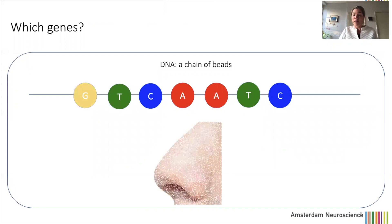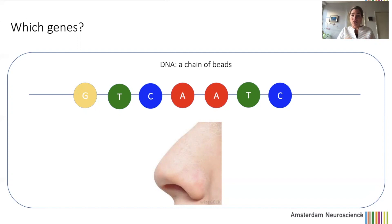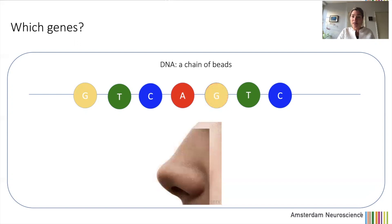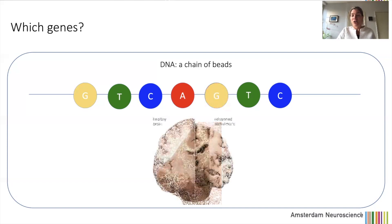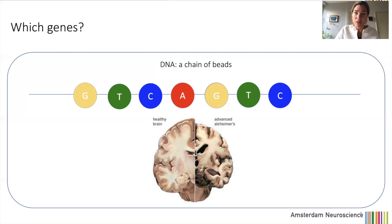Imagine that a piece of DNA codes for the form of your nose. The genome is made of four different molecules: G, T, C, and A. Now imagine that this piece of DNA is coding for one shape of nose. If the A turns into a G, then perhaps the nose will be a little bit different. This means that this one small change of molecules can have a large impact on the way that we are built, and it can also have a large impact on our vulnerabilities for different diseases, including Alzheimer's disease.